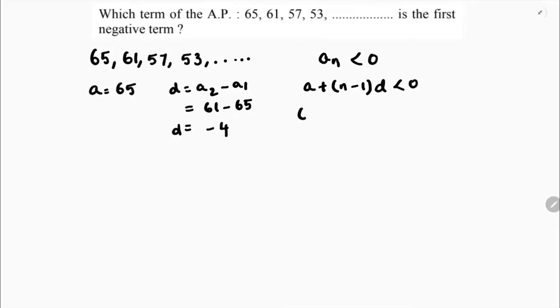If I substitute the values, the value of a is 65, (n minus 1) times d where d is minus 4, less than 0. So 65 minus 4n minus into minus plus 4 less than 0, so 69 minus 4n less than 0.